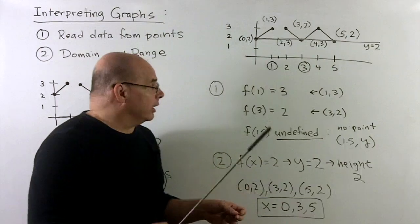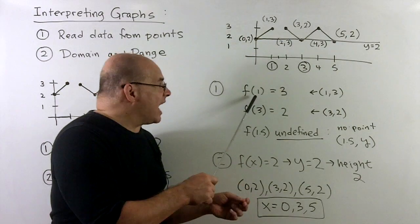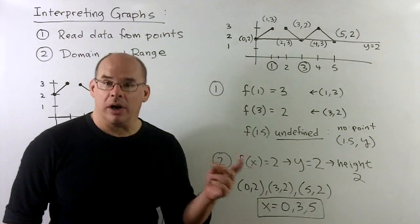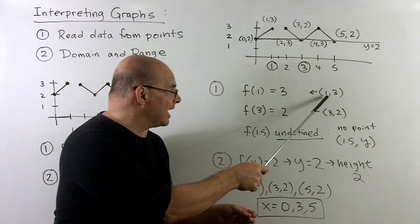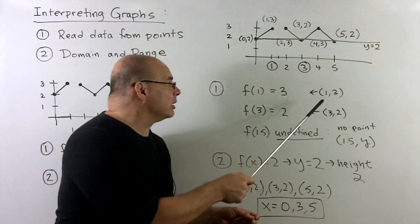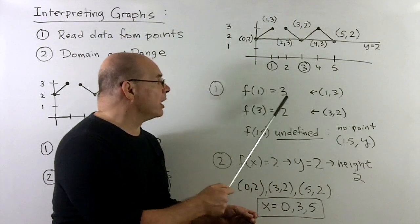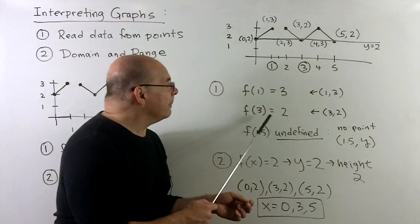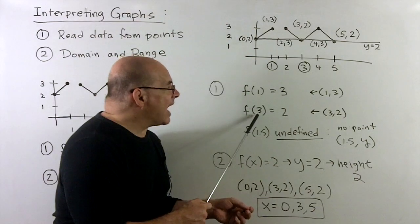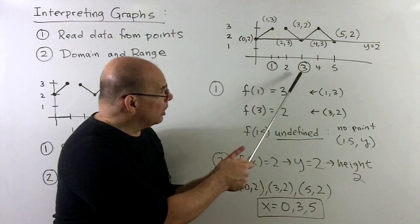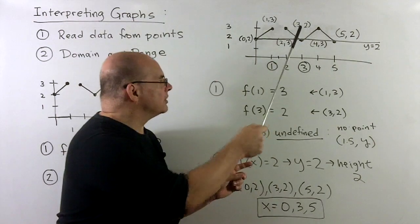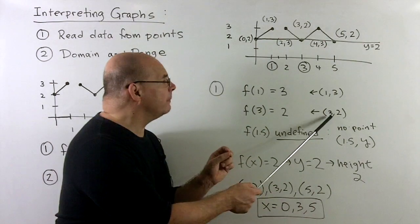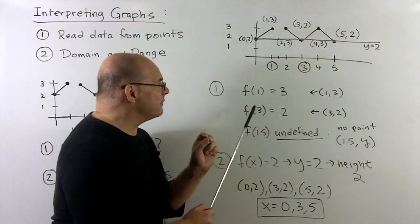Now, f of one. We have an input of one here, which represents an x. If I look at x on the x-axis, we go above and there's a point one comma three. Here this has one as the input, so that means three is going to be the output. So f of one is equal to three. If I want f of three, same idea. We know the input is three, so that's going to be an x. I look for three on the x-axis. We look above and there's the point three comma two. So we have a three here as our input. Output is going to be equal to two. So we have f of three equal to two.